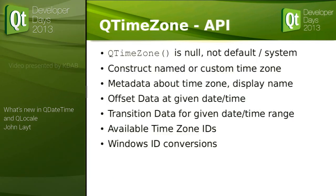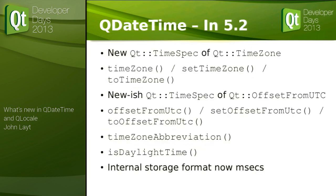Some quick API points: QTimeZone is null by default — it is not the default or system locale, it's more like QDateTime in that aspect. If you construct a named time zone that's invalid, you'll get an invalid time zone. You can get metadata about the zone: display name, offset data (standard offset and daylight savings offset), transition data between two dates, and find out what time zones are available on a platform. We've also provided API for the Windows ID conversion for PIM apps that need to talk to Exchange servers.